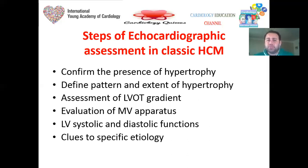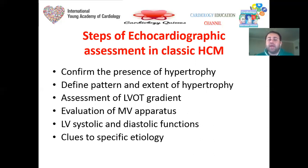After knowing the definition and morphological types, we start with steps of echocardiographic assessment, focusing on classic HCM. When you find left ventricular hypertrophy and suspect HCM, move sequentially: confirm the presence of hypertrophy, define the pattern and extent of hypertrophy, assess the LVOT gradient, evaluate the mitral valve apparatus for SAM or mitral regurgitation, assess LV systolic and diastolic function, measure left atrial volume — very important for prognosis — and look for clues to specific etiology.